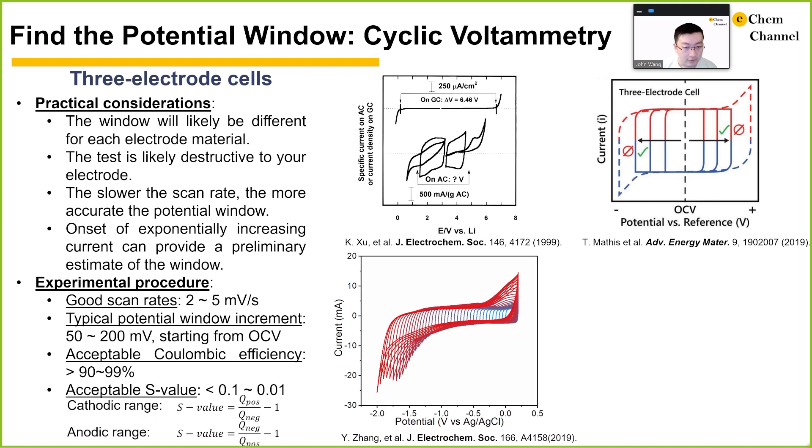Another parameter named S-value proposed by Kang Shu and others is very similar to coulombic efficiency but allows for the cutoff limit to be better defined. In this case, for the cathodic range, you will divide the charge of positive current by the charge of negative current and subtract the result by 1. For the anodic range, you will invert the division of charges from the positive and negative current. This allows the value to be positive in the range that we care about. A cutoff limit can be set at 0.1 or 0.01 depending on your system.